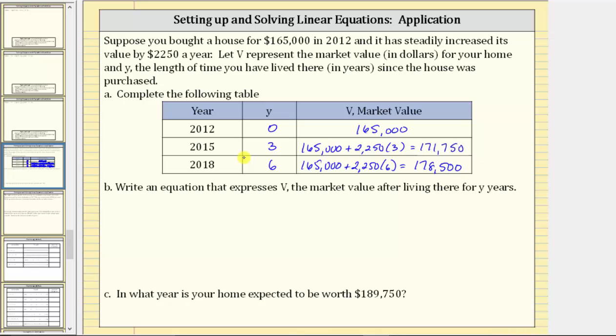For part B, write an equation that expresses V, the market value, after living there for Y years. Well again because the market value increases by $2,250 each year, the market value V is equal to the starting value of $165,000 plus $2,250 times Y, the number of years you've lived in the home. So plus $2,250Y.